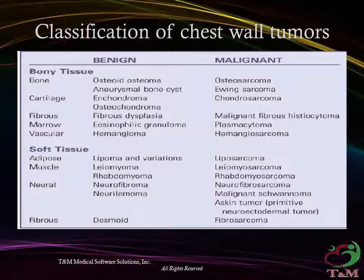Other benign bony tumors include eosinophilic granuloma, or from vascular structures including hemangioma. Counterpart malignant tumors arising from the same tissue of origin include osteo-, Ewing, and chondrosarcomas; malignant fibrous histiocytoma; plasmacytoma; and hemangiosarcoma. Benign tumors from soft tissue include lipoma from fat tissue, leiomyoma from muscles, neurofibroma from nerves, and desmoid from fibrous tissue. Sarcomas on the malignant scale can arise from the same tissues of origin.